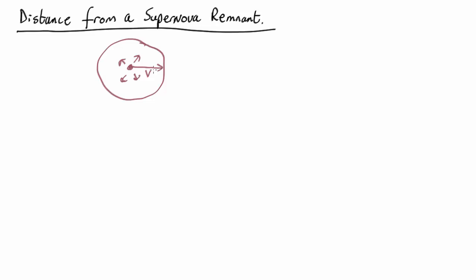In that case, can we work out how far away the supernova is? Well, we've got two observations. One thing we can do is measure the spectrum, so let's say we take a spectrum at the center of the supernova remnant.